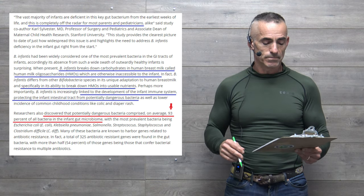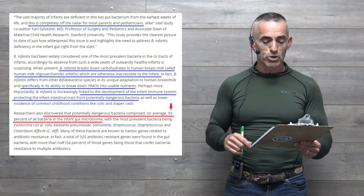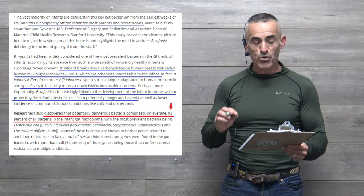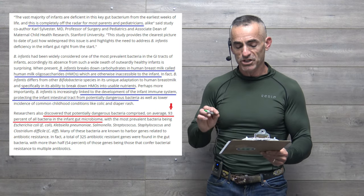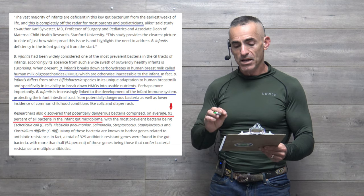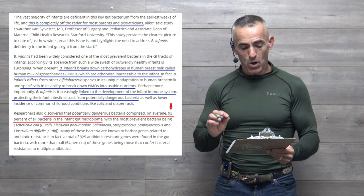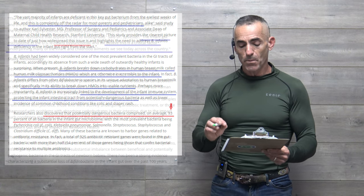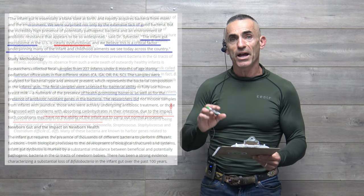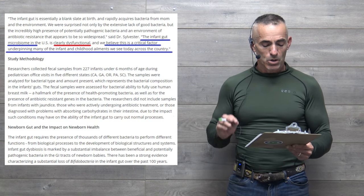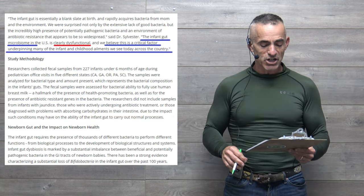Many of these bacteria are known to harbor genes related to antibiotic resistance. In fact, a total of 325 antibiotic resistant genes were found in gut bacteria, with more than half (54%) of those genes being those that confer bacterial resistance to multiple antibiotics.